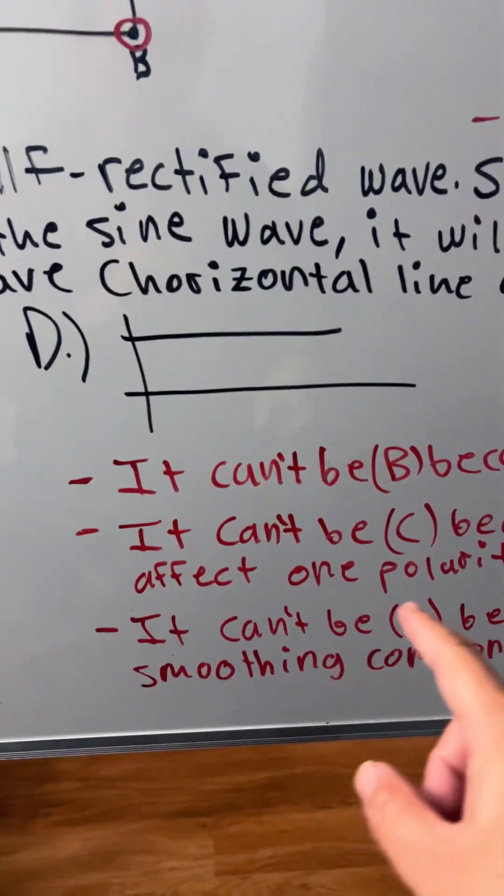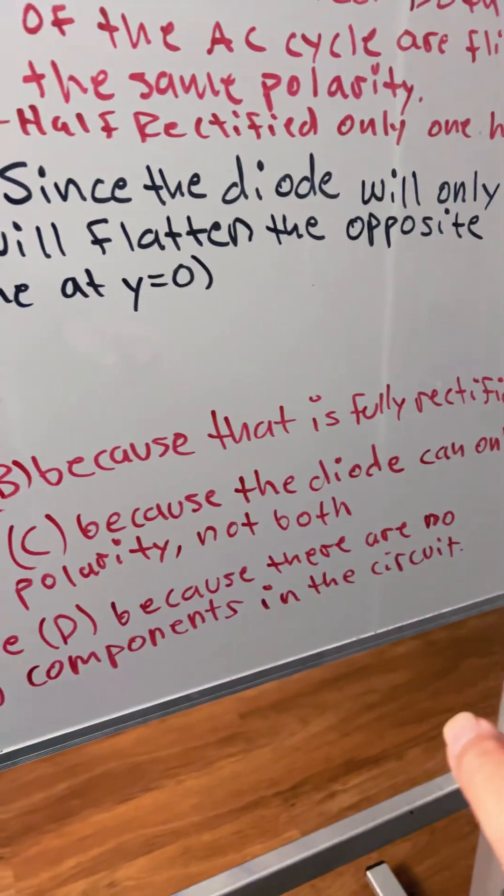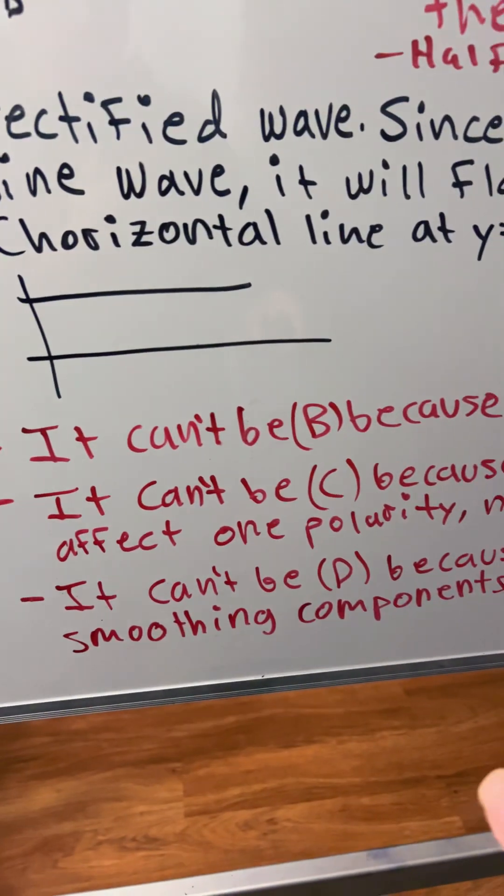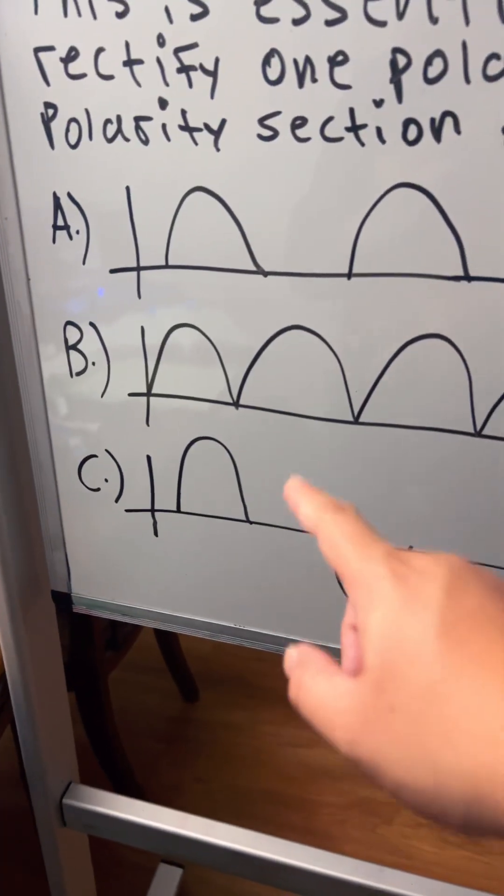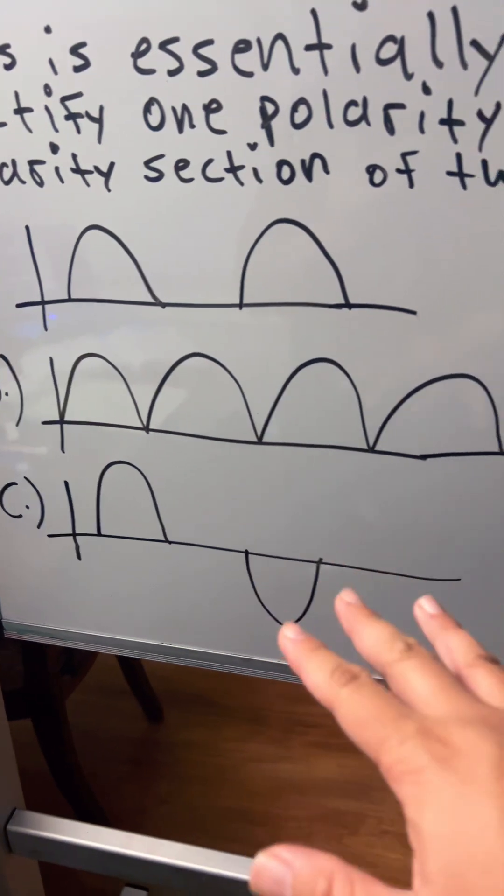It can't be C because the diode can only affect one polarity, not both. So it's affecting both, the top and the bottom.